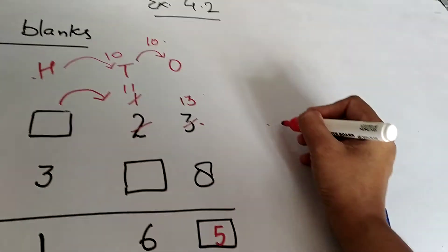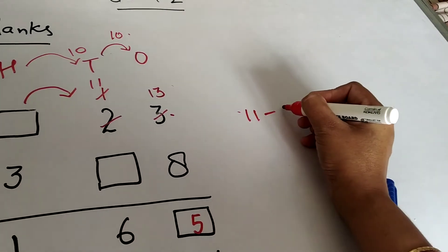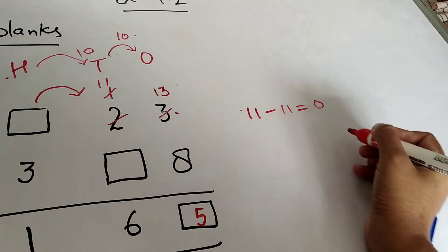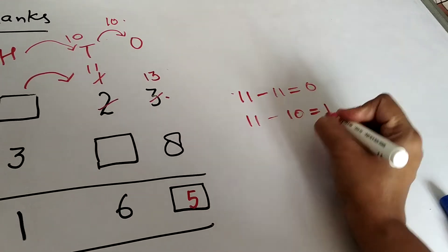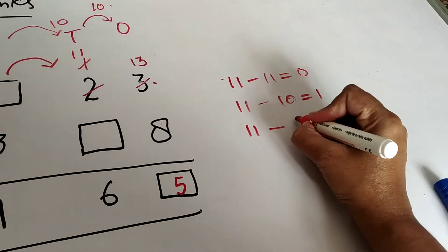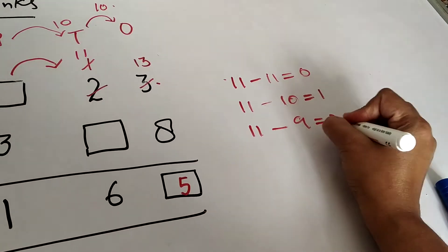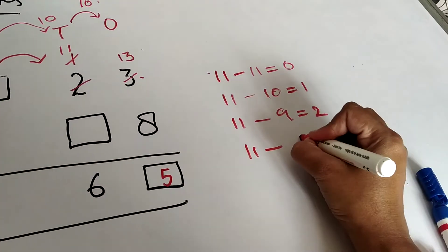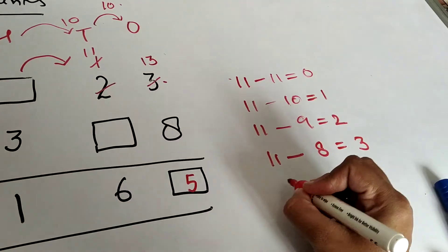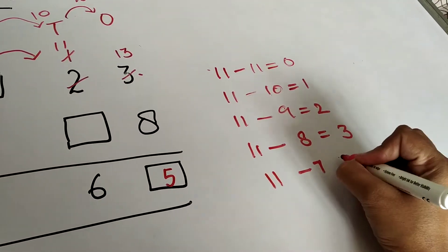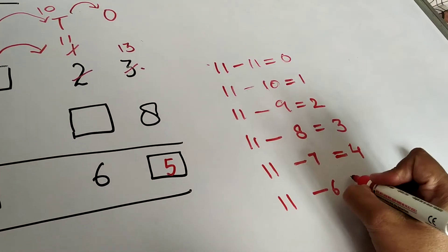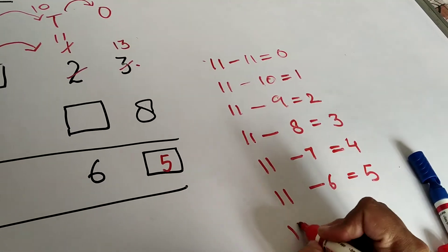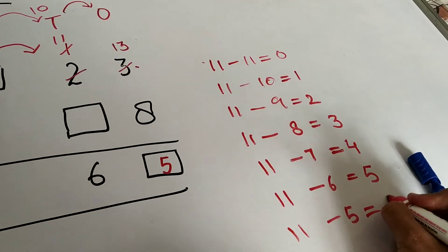11 minus 11 will give 0, 11 minus 10 will give 1, 11 minus 9 will give 2, 11 minus 8 will give 3, 11 minus 7 will give 4, 11 minus 6 will give 5, and 11 minus 5 will give 6.